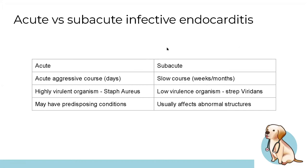There are two types of IE: acute and subacute. Acute IE develops suddenly over a few days, generally caused by Staph aureus — a highly virulent organism — and these patients usually have pre-existing heart conditions. Subacute IE develops more slowly over weeks to months, generally caused by Strep viridans, a low-virulence organism. Subacute IE affects abnormal structures, such as prosthetic heart valves.